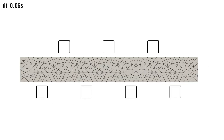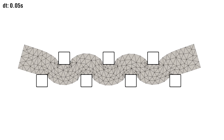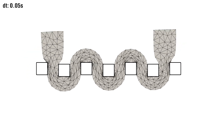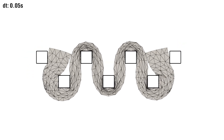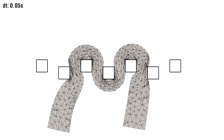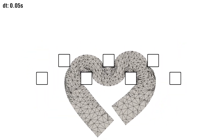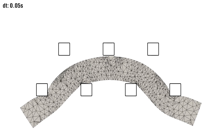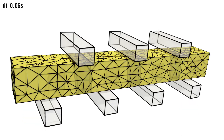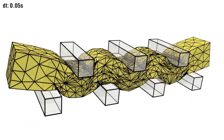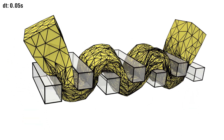Complex scenes can be simulated without the need to tune the input mesh density. In this example, a bar is compressed by multiple blocks requiring high refinement on a few sharp contact lines.